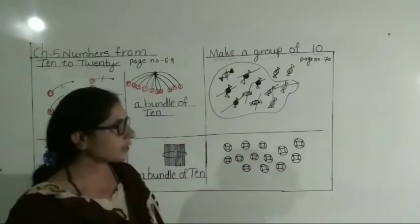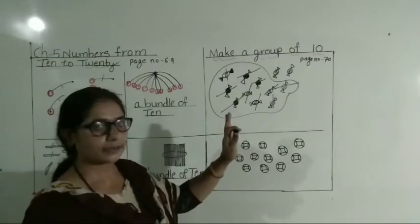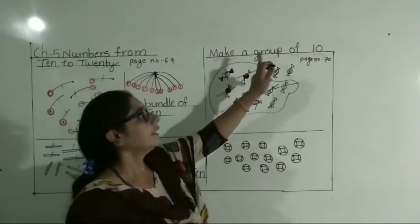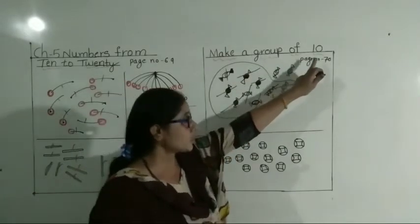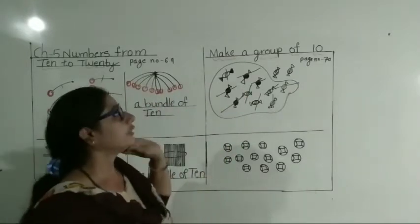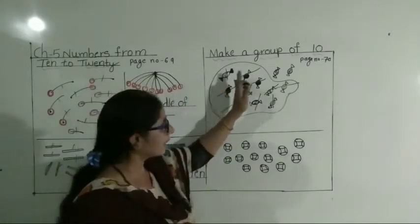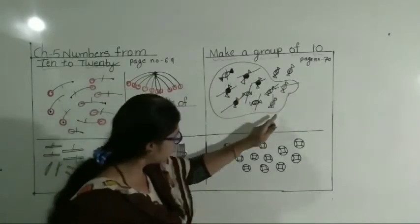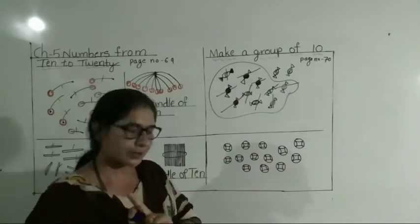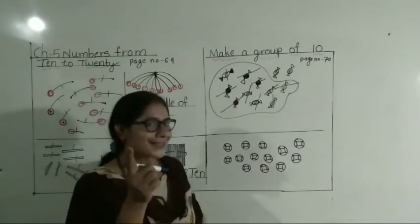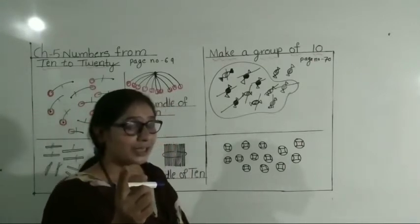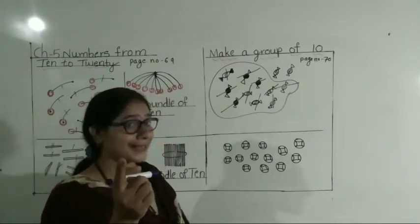Understood, student. Kese karna hai? First you count ten objects, then make a group like this. Understood, student? Next, you may answer, student. Very good, student — sab answer de raha hai.